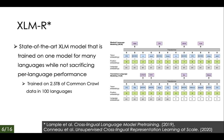XLMR is a current state-of-the-art multilingual language understanding model. It is a transformer-based masked language model trained on 2.5 terabytes of Common Crawl data in 100 languages. It has also been shown to significantly outperform multilingual BERT on a variety of cross-lingual benchmarks. We customize this model to fit our downstream task using a BiLSTM plus attention model for our crisis domain.